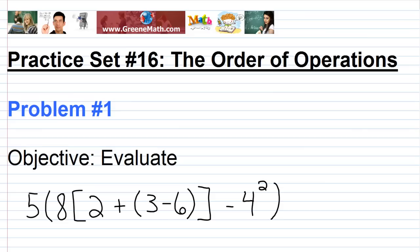The order of operations has a highest priority as step one: work inside of any grouping symbols, such as parentheses, absolute value bars, curly brackets, or whatever they may be. So we list this as parentheses — that's how it's commonly taught.